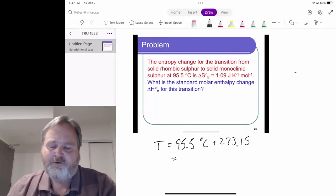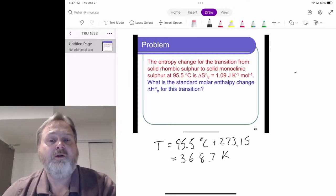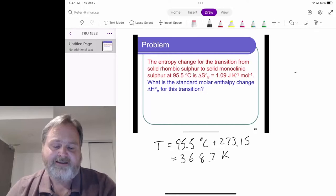Our temperature is going to be 95.5 degrees Celsius plus the 273.15. And that's going to give us, let's say, 368.7 kelvin as our actual temperature of transition in this case.